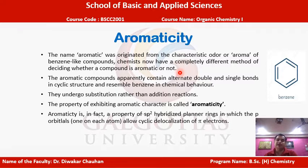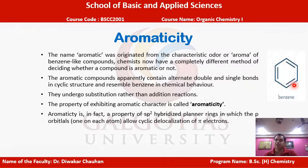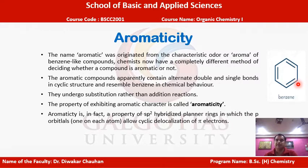For a compound to be aromatic, anti-aromatic, or non-aromatic, it must satisfy certain conditions. Aromatic compounds contain continuous conjugation of pi electrons. In benzene, the ring is cyclic with alternating double and single bonds in conjugation, resulting in a continuous pi electron cloud above and below the cyclic ring. This stabilizes the ring through high resonance energy, causing benzene-type compounds to undergo substitution reactions rather than addition reactions.